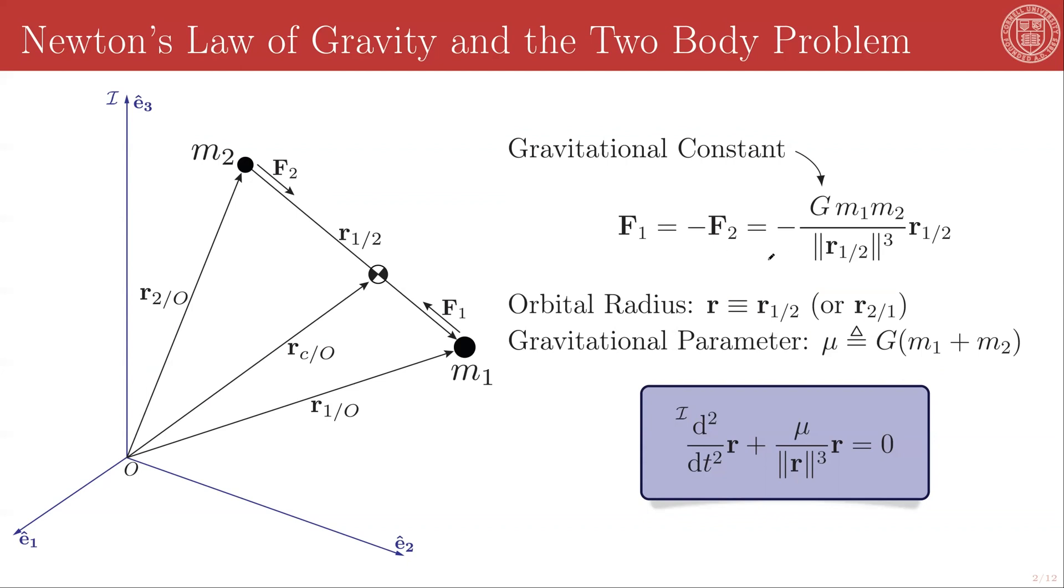Newton's law of gravity tells us that the magnitude of these forces obeys an inverse square law. There's a constant of proportionality, the gravitational constant G, multiplied by the product of the two masses and scaled by the distance between them, the norm of R1 rel2 or equivalently R2 rel1, squared.